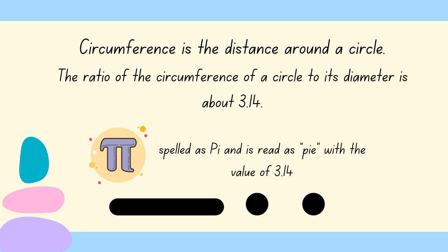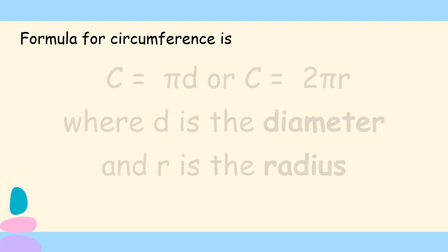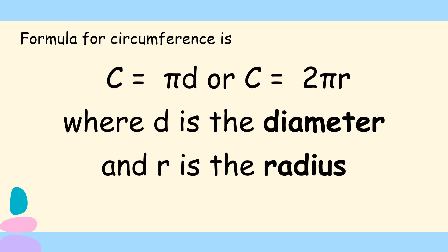Actually it's not just 3.14. There are more digits that follow but to fix our number, we just made it 3.14. So the formula for circumference is C equals pi times D or C equals 2 times pi times R, where D is the diameter and R is the radius. So if the given is diameter, we'll use the first formula. If radius is given, we'll use the second formula.